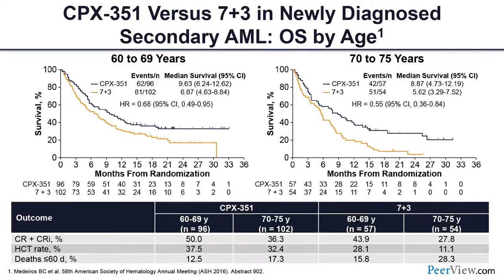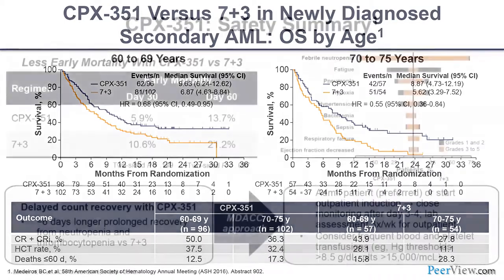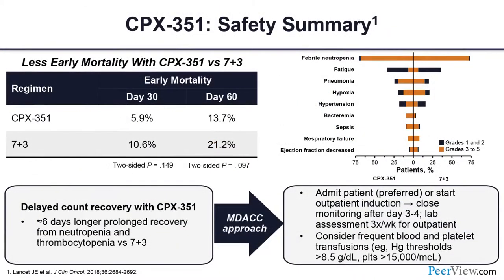The quizartinib salvage study compared oral single-agent quizartinib to three-drug IV chemotherapy (FLAG-IDA or MEC) and showed survival benefit. Even if equal, an oral pill versus a 28-day hospital admission with mucositis and infection is compelling. Gilteritinib similarly showed almost double the response rates of potent three-drug IV chemotherapy as a single agent in relapsed AML — something we rarely see in solid tumors. The drug is approved, and post-transplant maintenance with these agents further improves survival. The real impact will be in combinations with induction and hypomethylating agents.